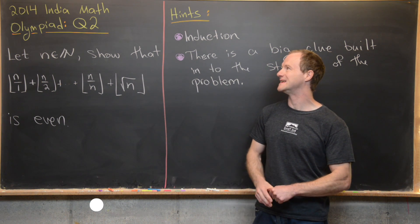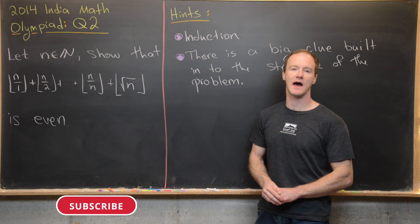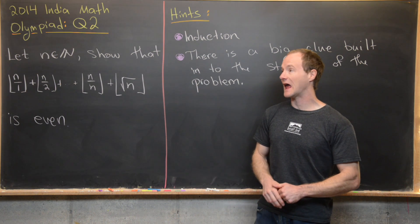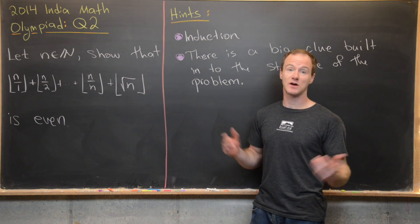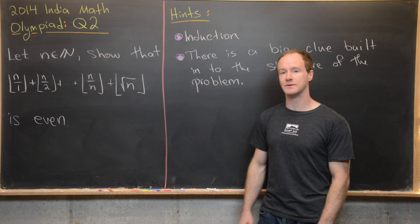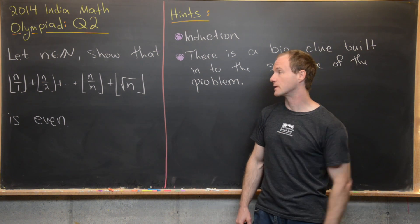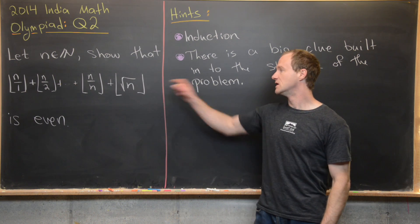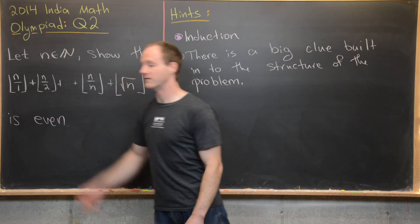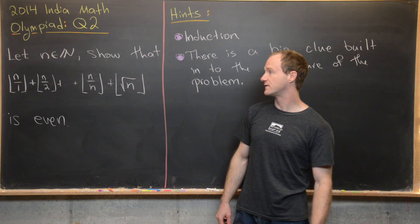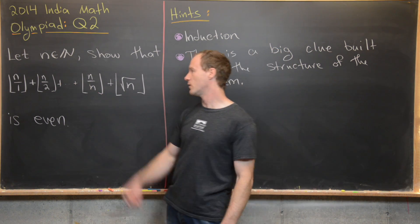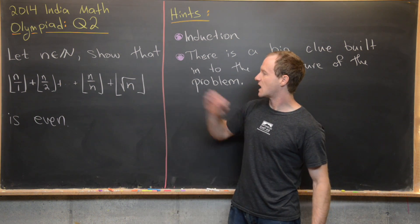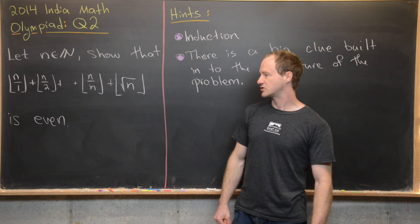Here we're going to look at a problem from the 2014 India National Math Olympiad, question two. This is a question involving the floor function, and one suggested by some viewers. We want to let n be a natural number and show that the sum — floor(n/1) + floor(n/2) + ... + floor(n/n) + floor(sqrt(n)) — is even for all natural numbers n.